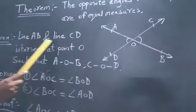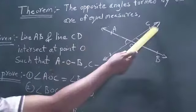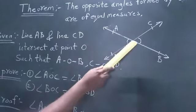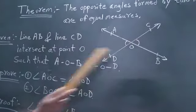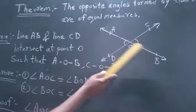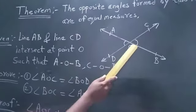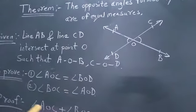Here given line AB and CD. AB and CD are two lines. They intersect at point O such that A-O-B, C-O-D. Now what were to prove?